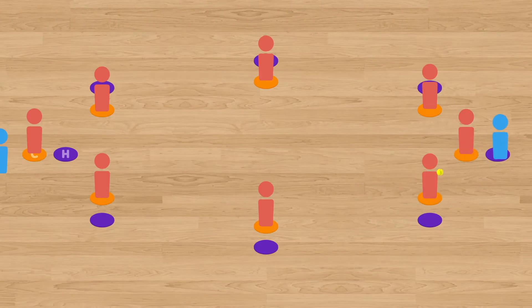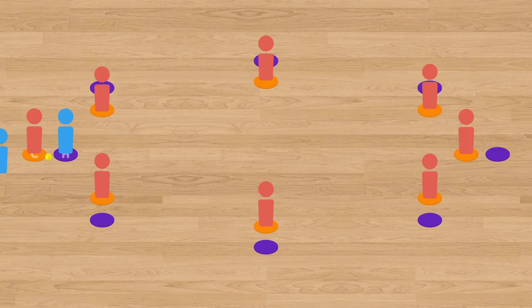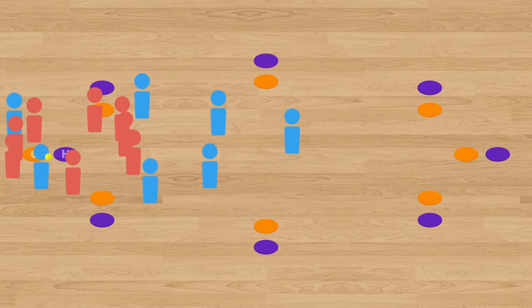If the fielding team manages to relay the ball around the bases before the batting team player can get back home, the fielding team scores a point. Once each player on the batting team has had a turn, the two teams switch roles.